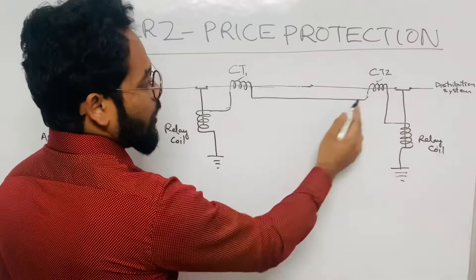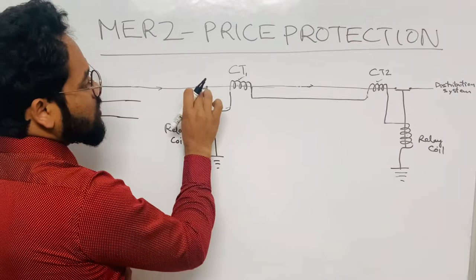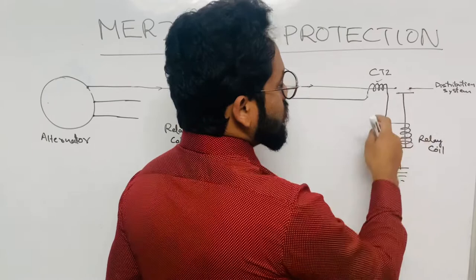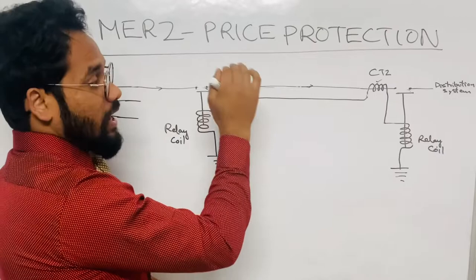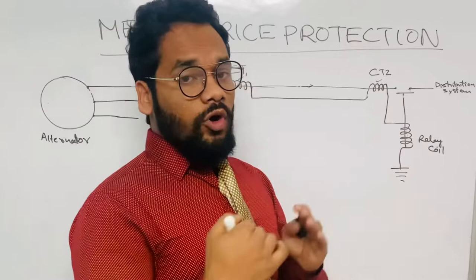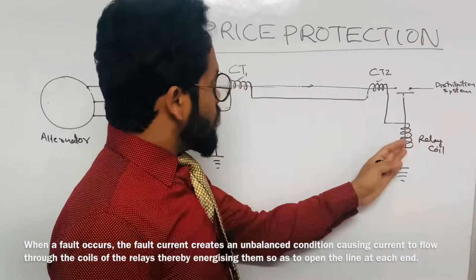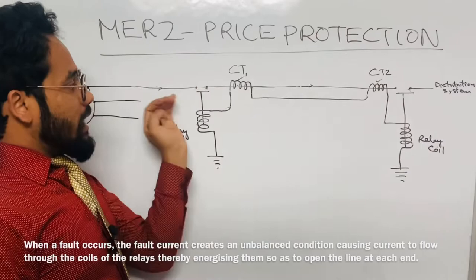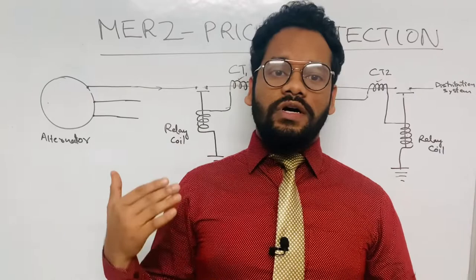When current flows, both relay coils will be energized. Because of the energization of the coils, both contactors will open — on both the source side and the distribution side. When these contactors open, current will not flow to the distribution system. This is the desired outcome, since there is a fault in the system and we don't want current flowing to the distribution system. The Merz-Price protection system achieves this by opening both contactors, cutting off current flow during the feeder fault condition.